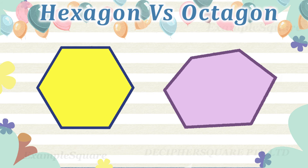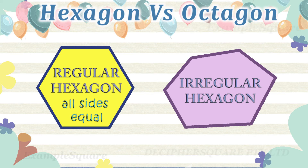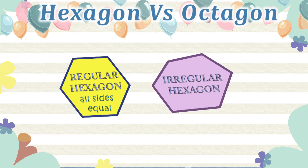Similarly, if all the six sides of the hexagon are equal and all the six interior angles of the hexagon are equal, then it is a regular hexagon. Otherwise it is an irregular hexagon. Here is an example of a regular and irregular hexagon.